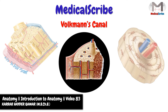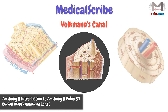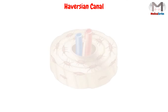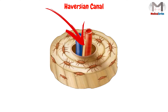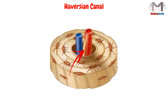Hello everyone, I'm Karar Haidar, and this is your channel MedicalScribe. We said in the Haversian Canal video that this canal is located in the center of the osteon, and it contains blood vessels and nerve fibers that nourish the adjacent bone cells, or the osteocytes.